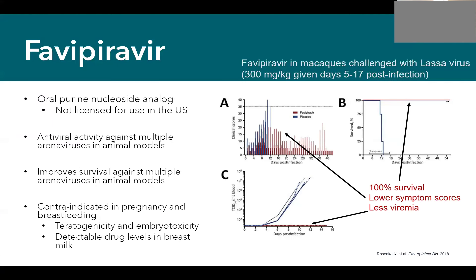The second antiviral in our toolkit is favipiravir, an oral purine nucleoside analog. It is not licensed for any conditions in the U.S. It is licensed in some countries — for example, in Japan for influenza treatment. In the United States, you must obtain an Emergency Investigational New Drug (EIND) authorization for each individual patient before giving it, and this needs to be done in advance.